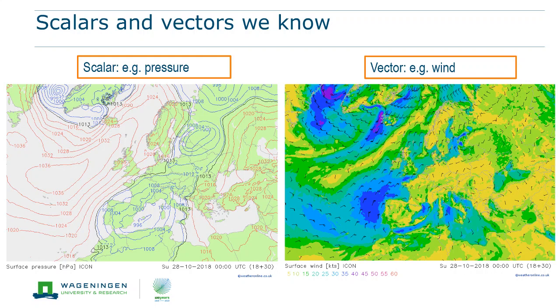Scalars and vectors you already know. To the left you see an example of a scalar field, the distribution of the pressure at the Earth's surface, a pressure map. Pressure only has a magnitude and does not have a direction.